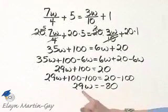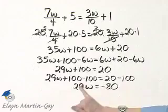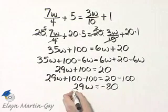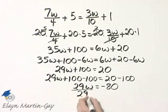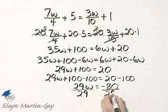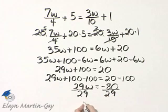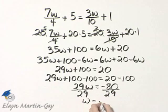I'll finish solving now by dividing both sides of this equation by the coefficient of w, which in this case is 29. And notice the 29s divide out, w is equal to negative 80 over 29.